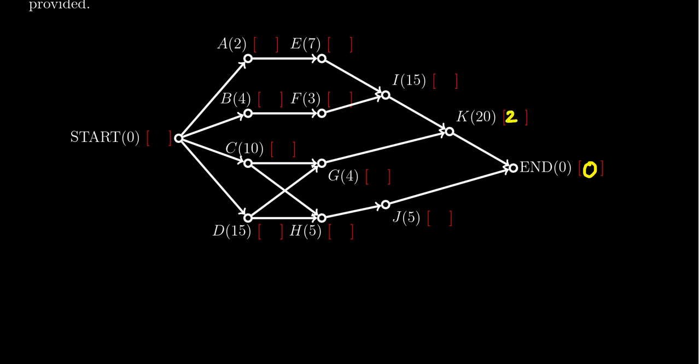You have J whose critical time is going to be 5 plus 0. Then who precedes J? That's only H. H has processing time of 5, 5 plus 5 is 10. G only precedes K whose critical time was 20, 20 plus 4 is 24. Naturally here, I only precedes K so we're going to take 15 plus 20 and get 35.